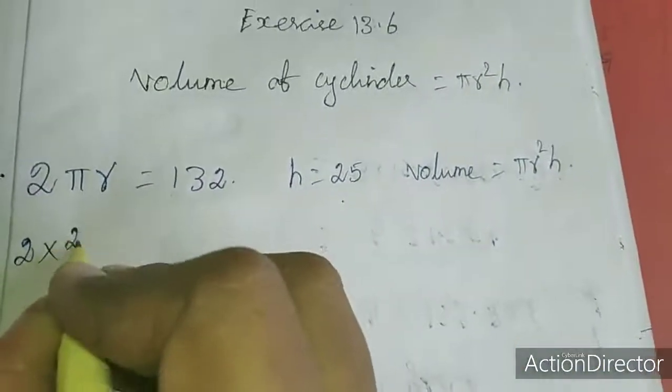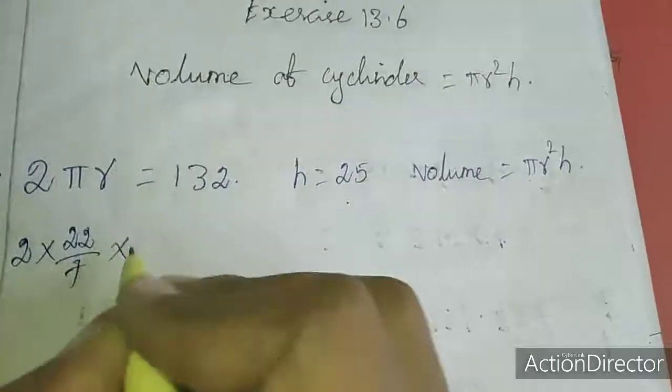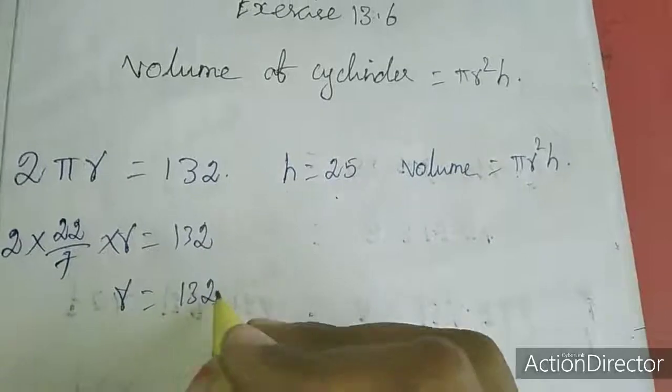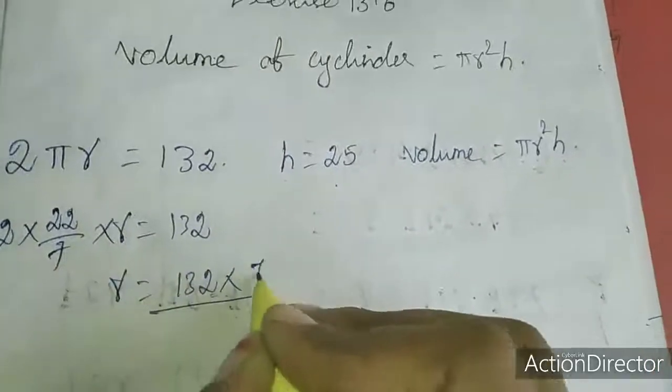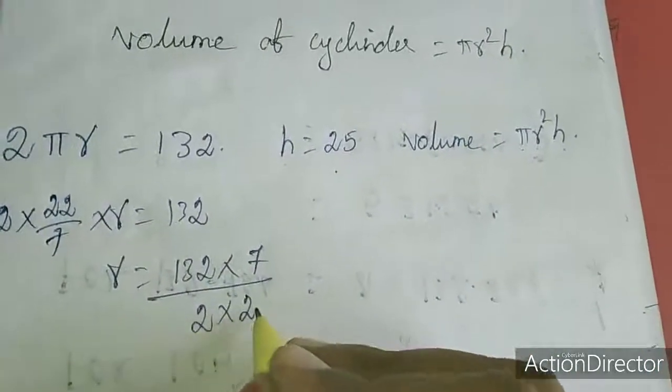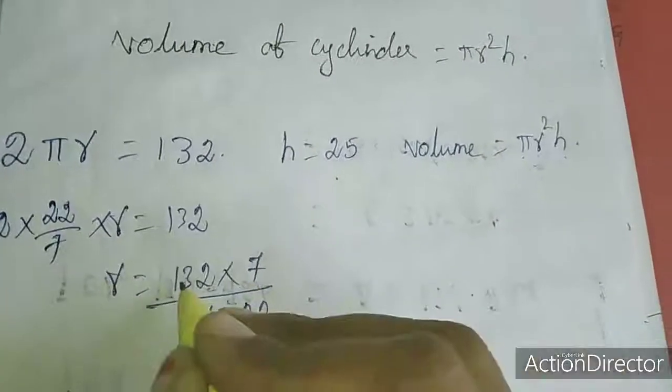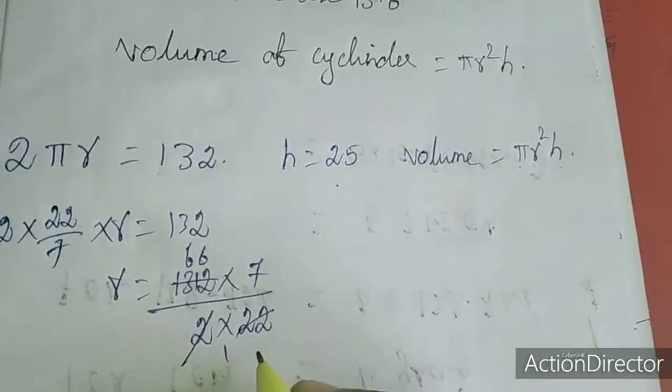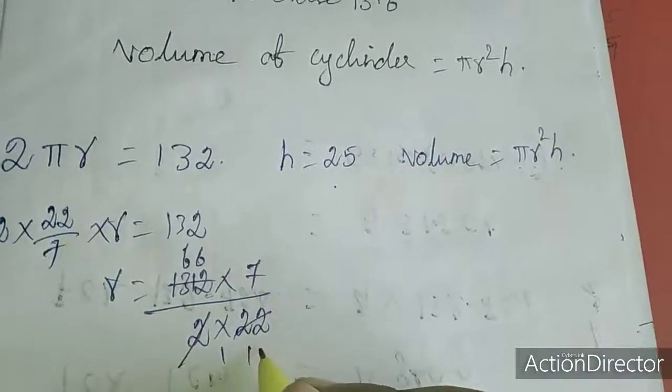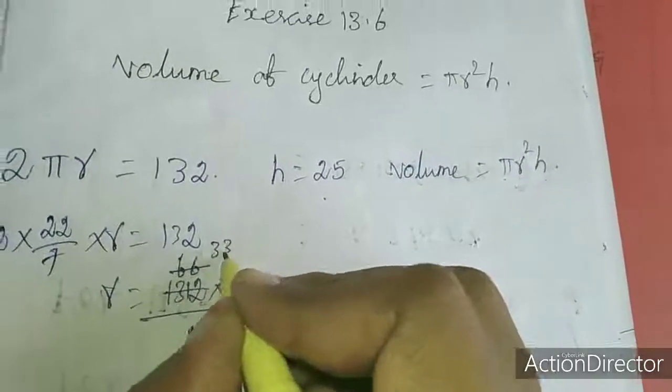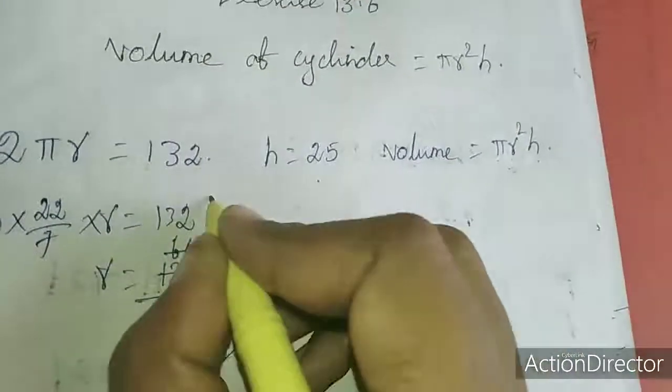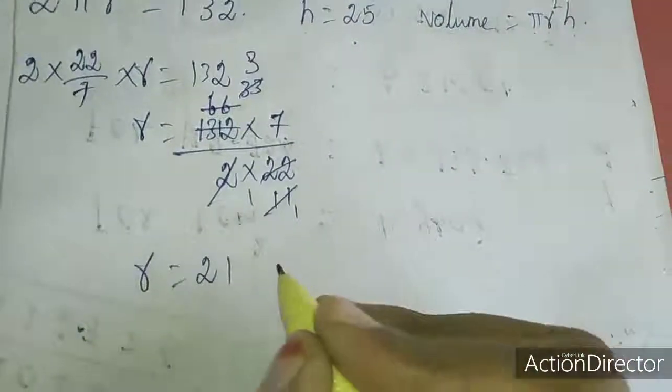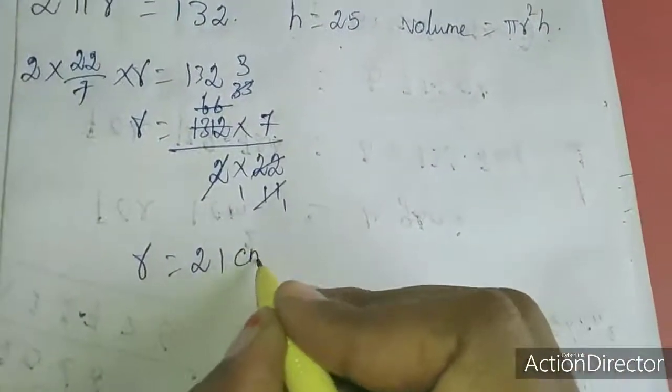So 2 into pi, that's 22 by 7, times r equals 132. Solving this, r equals 132 times 7 divided by 2 times 22. So 3 into 7 is 21, therefore r equals 21 centimeters.